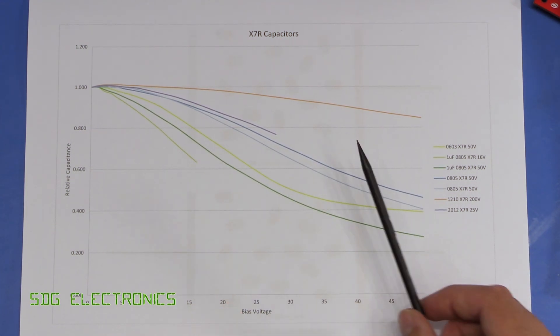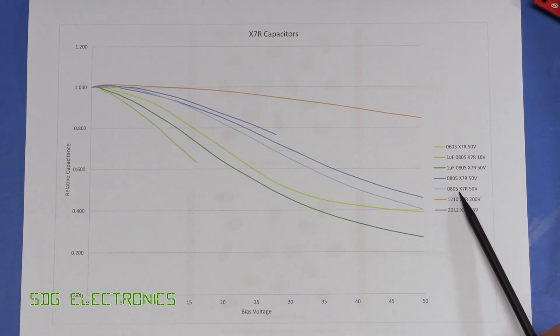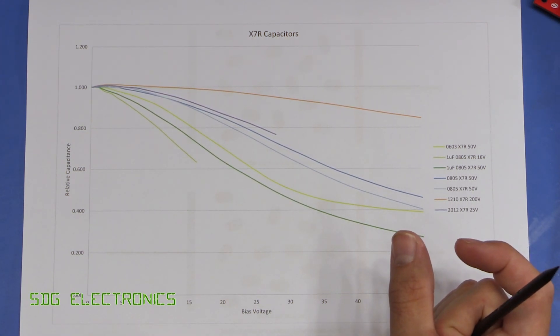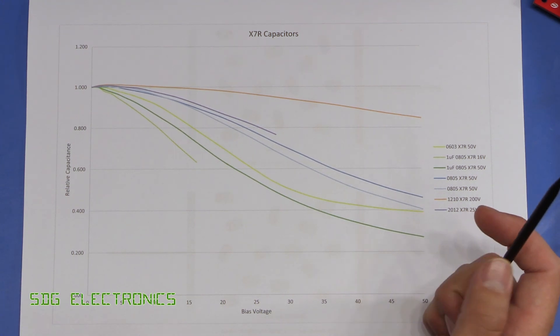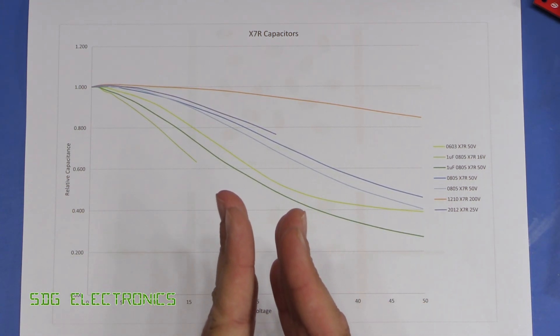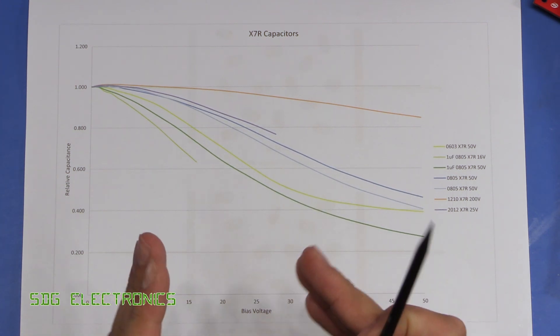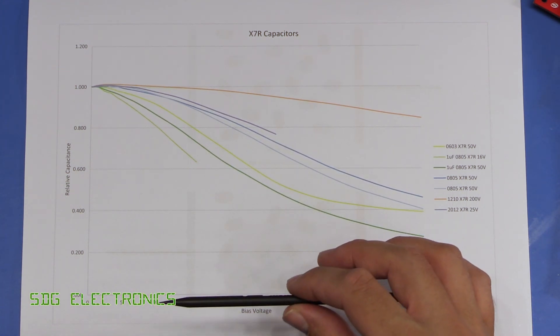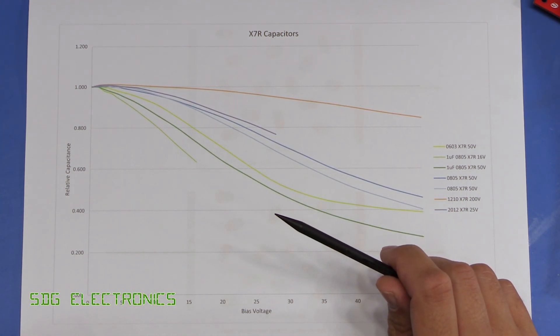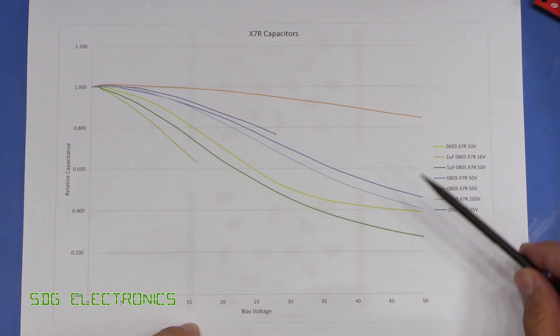That's also a similar effect to using smaller physical size capacitors. So when the physical size is smaller for a given capacitance and voltage, the actual dielectric layers are much thinner and therefore there's a much higher electric field. So the dipoles become locked in place at much lower DC bias voltage.